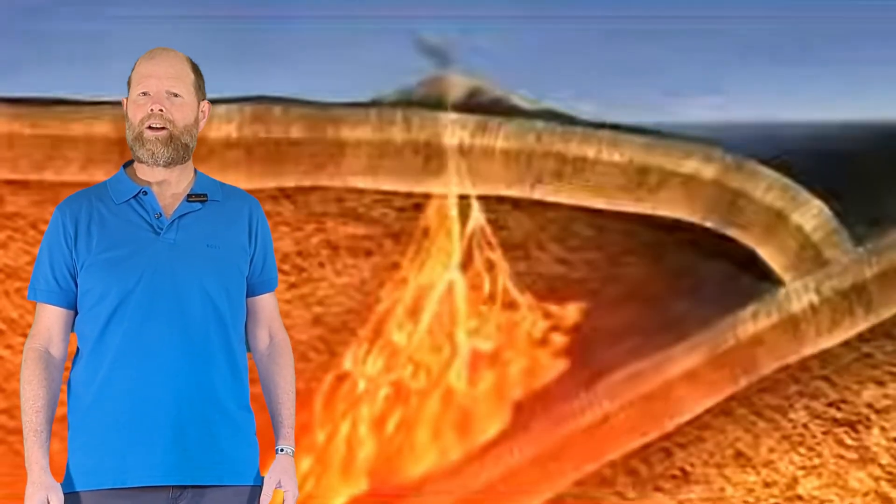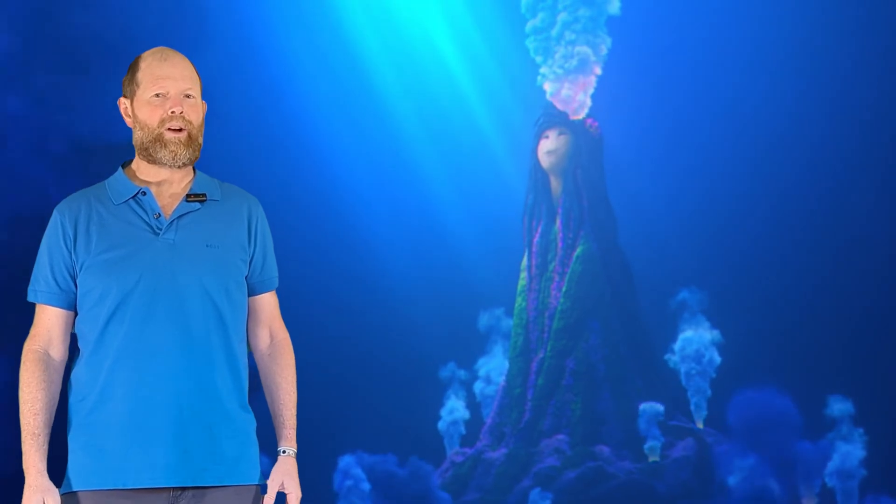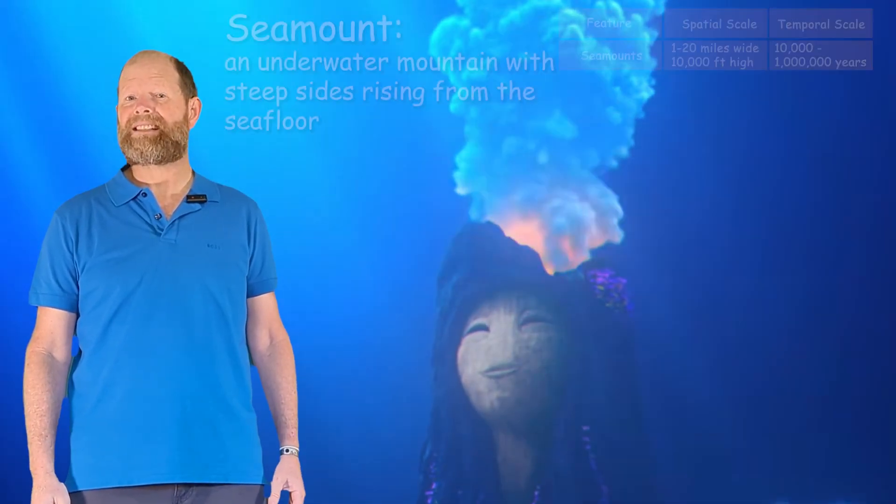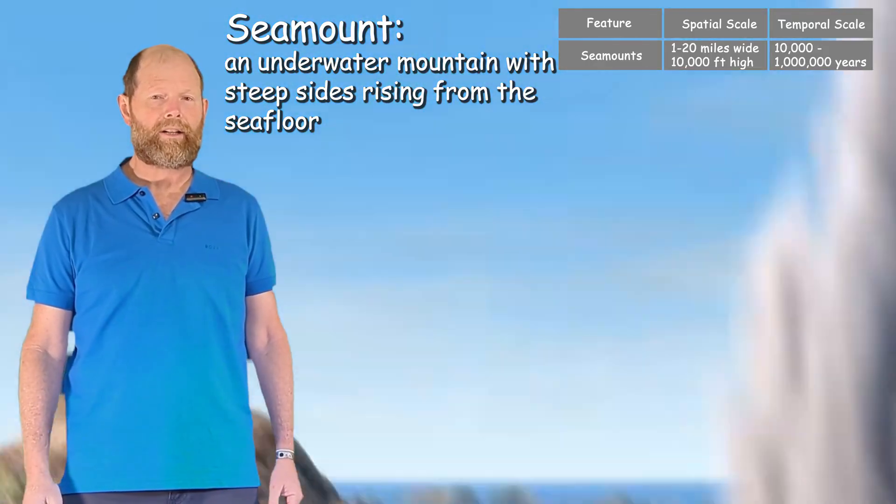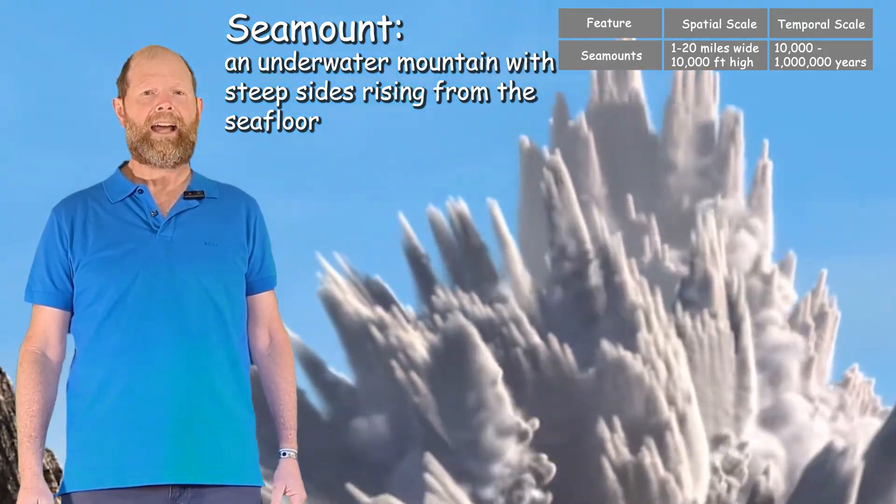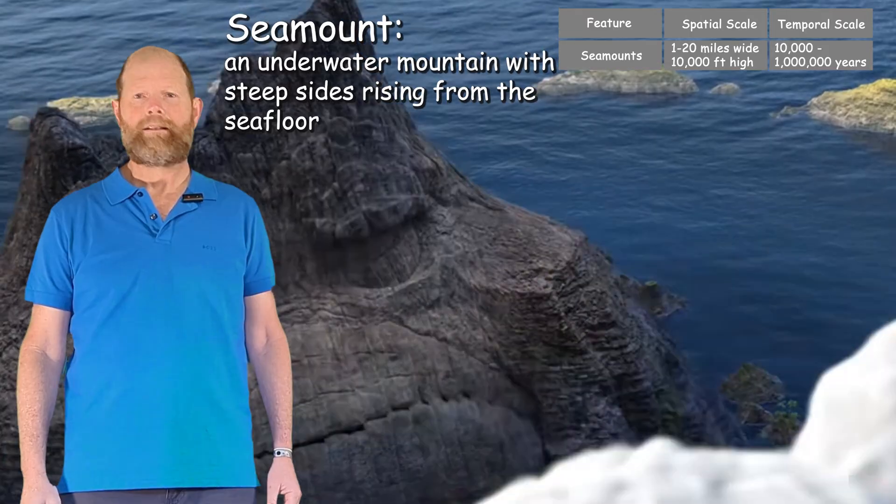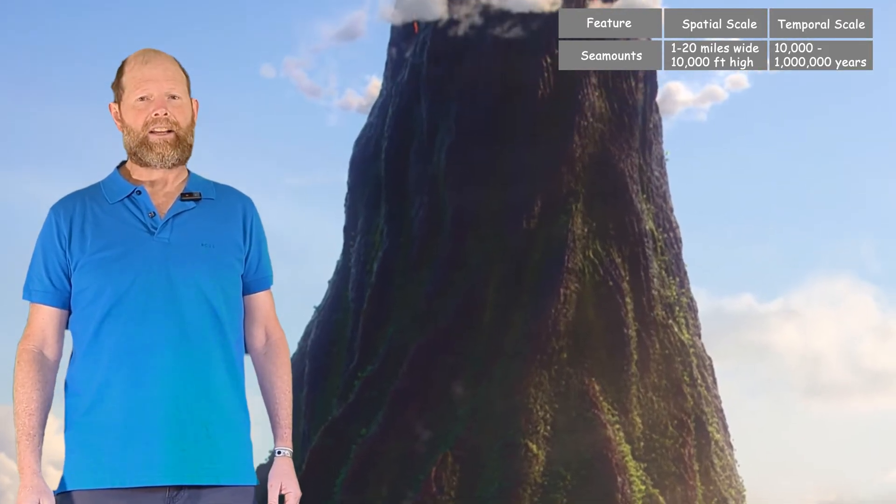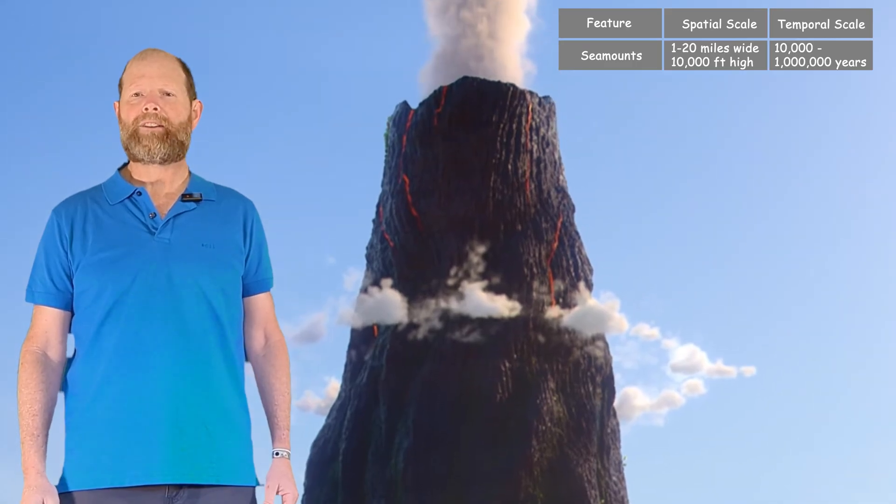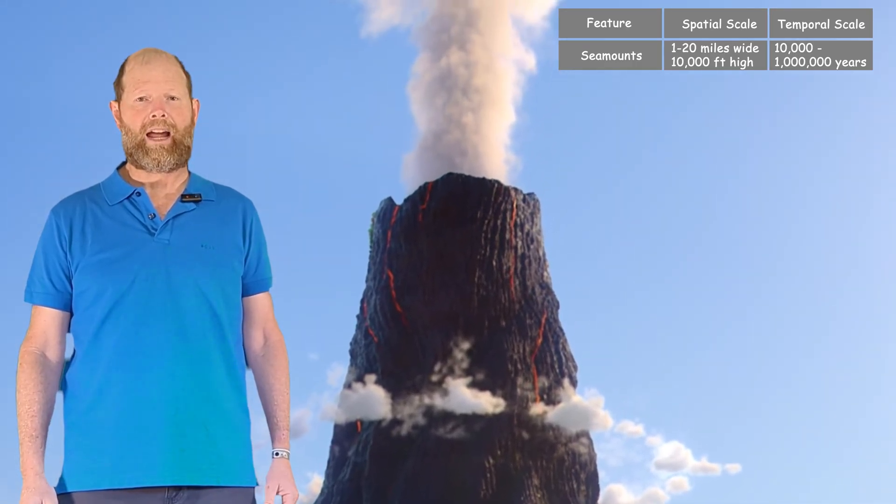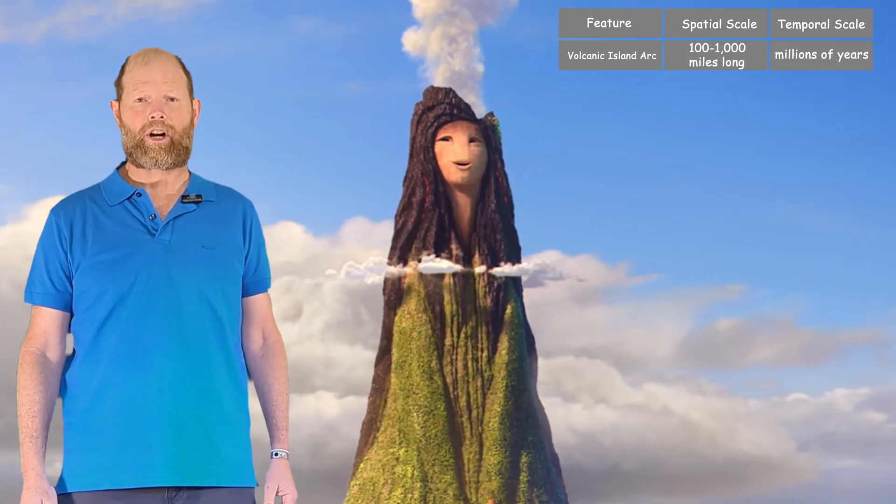However, if the oceanic crust is subducting under other oceanic crust, the volcanoes will be underwater. As the underwater volcanoes build height, it becomes a seamount. Once it reaches the surface of the water, it is reclassified as a volcanic island. Since the volcanic islands form just past the plate boundary, they often appear in curved lines known as volcanic arcs.